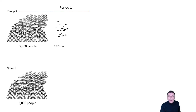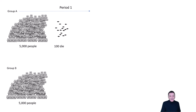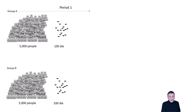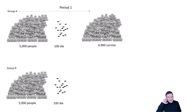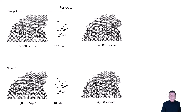During period one, with a 2% mortality rate — so this might be six months, a year, whatever — 2% of 5,000 is 100. So you'd expect 100 people from Group A to die during that first period, and 100 people in Group B to die. At the end of period one, Group A has 4,900 survivors and Group B has 4,900 survivors.